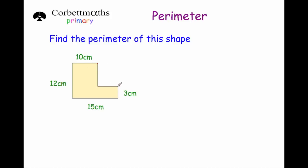We're going to focus on the two missing sides. First, for the horizontal line: the whole shape is 15 across, and the top part is 10. If the whole thing is 15 and this part is 10, the missing bit has to be five centimeters, because 10 plus five gives us the total width of 15. For the vertical side: the height of the whole shape is 12 centimeters, and one part is three centimeters. Three plus nine is 12, so the missing length is nine centimeters.